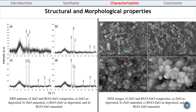The RGO ZNO composite showed an enhancement in crystallinity and became more homogeneous compared to ZNO. The nano-micro flower-like structure of ZNO was formed, and the RGO sheets were clearly observed connecting the ZNO particles.